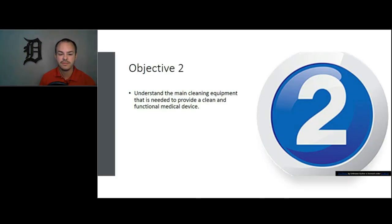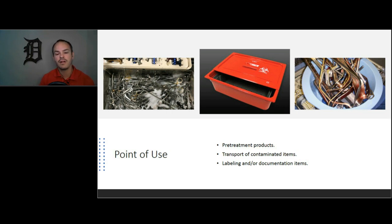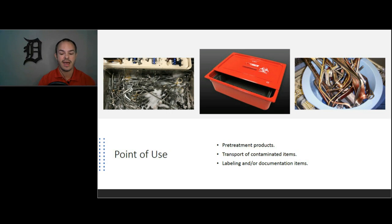Moving on to objective two: we want to understand the main cleaning equipment needed to provide a clean and functional medical device. It may be a stretch to label these products as cleaning equipment, but they are essential to the cleaning process. Point of use care of instruments is foundational to the cleaning of reusable medical devices. Pre-treatment products, transportation, and labeling products are all important pieces. In the ASC setting, you may not have case cards or certain things they do at the hospital, so we may have to do things differently — but we have to do them.